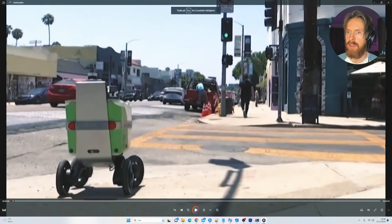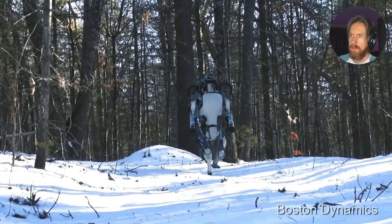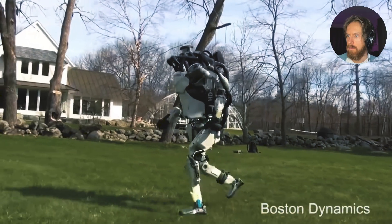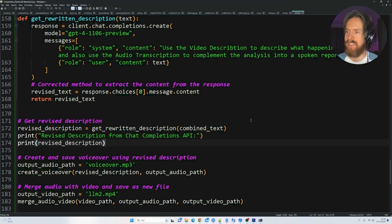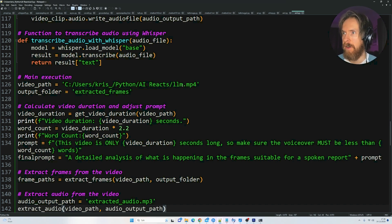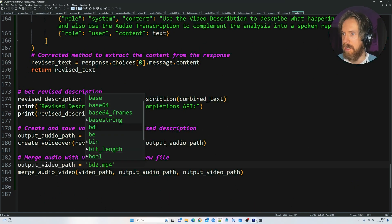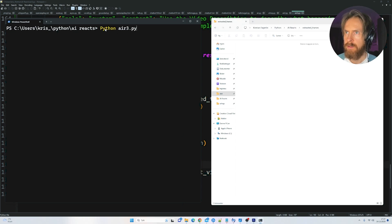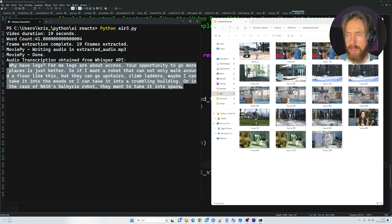So I went ahead and grabbed this video about Boston Dynamics robots. Let's have a listen to it. I think we're gonna try to run this and see what we can get out of this Boston Dynamics video. Let's change up the file names here. Let's run it. So the first thing we're gonna see now is the word count we're aiming for and here comes the frames.